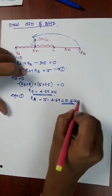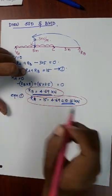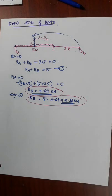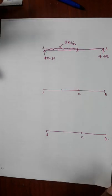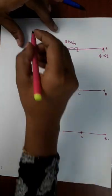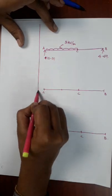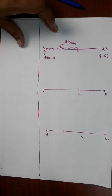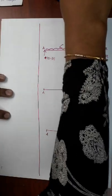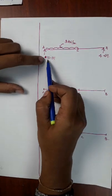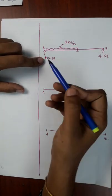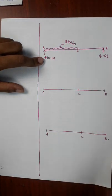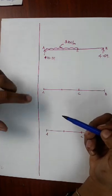Now if we look at RA and RB, we have the shear force and bending moment diagram. We set the shear force and bending moment diagram. RA is 10.31 kN and RB is 4.69 kN with UDL. We have to calculate the shear force diagram.